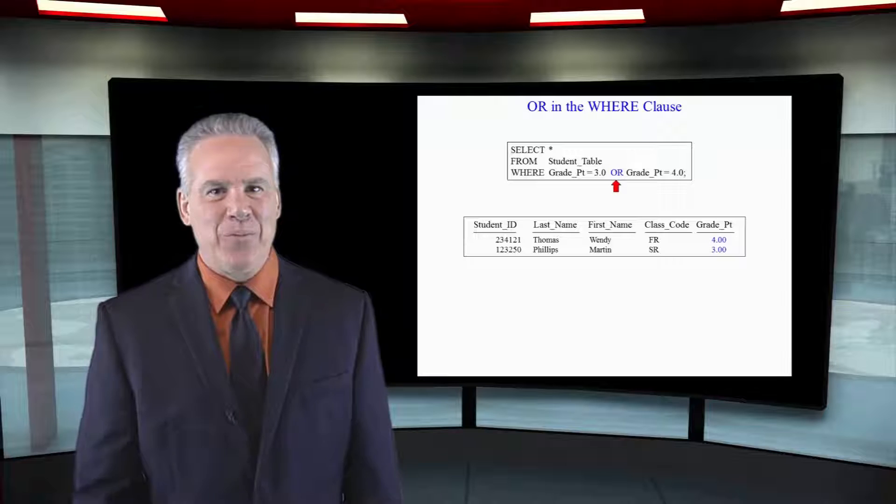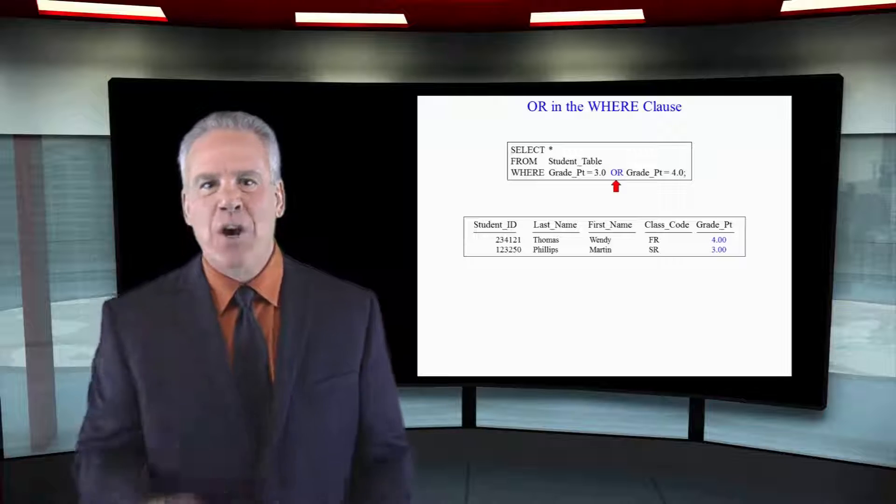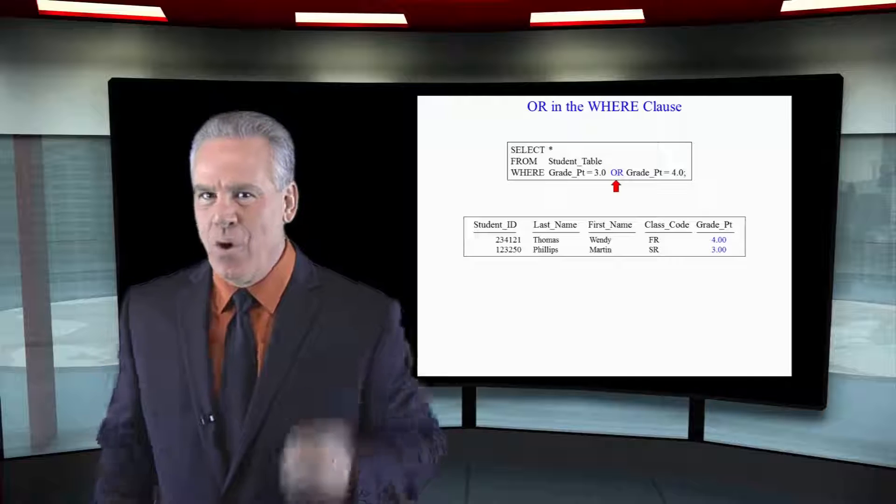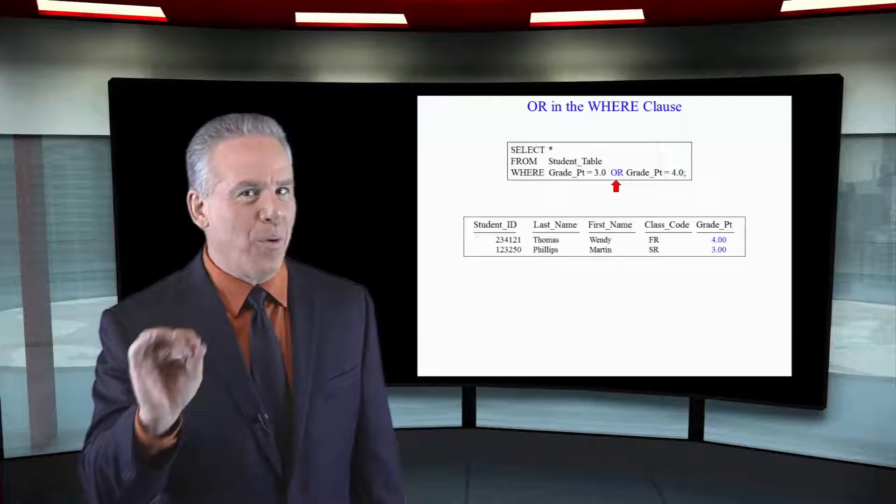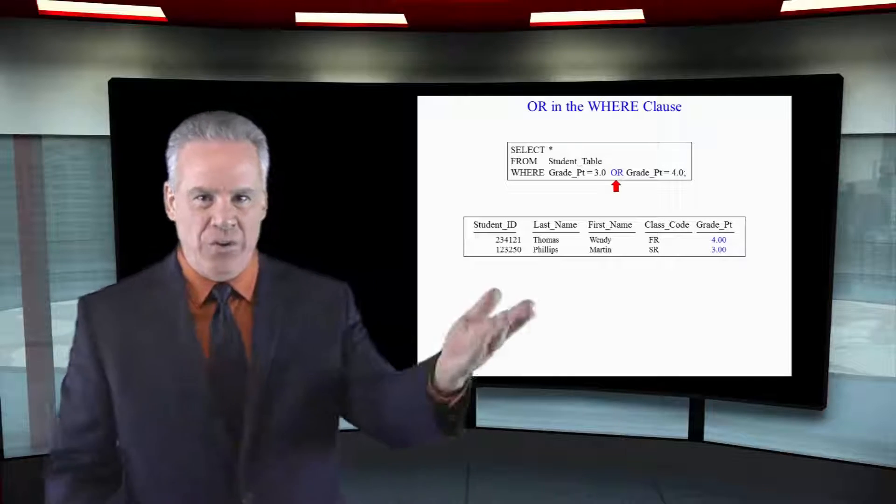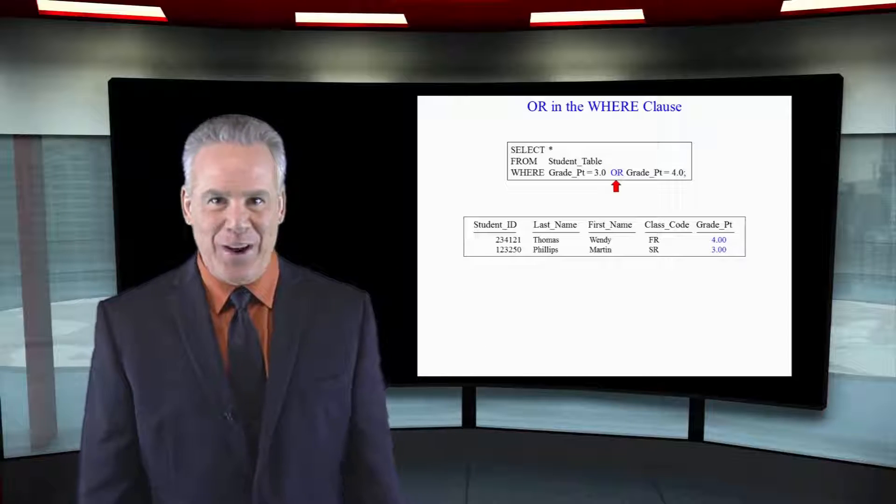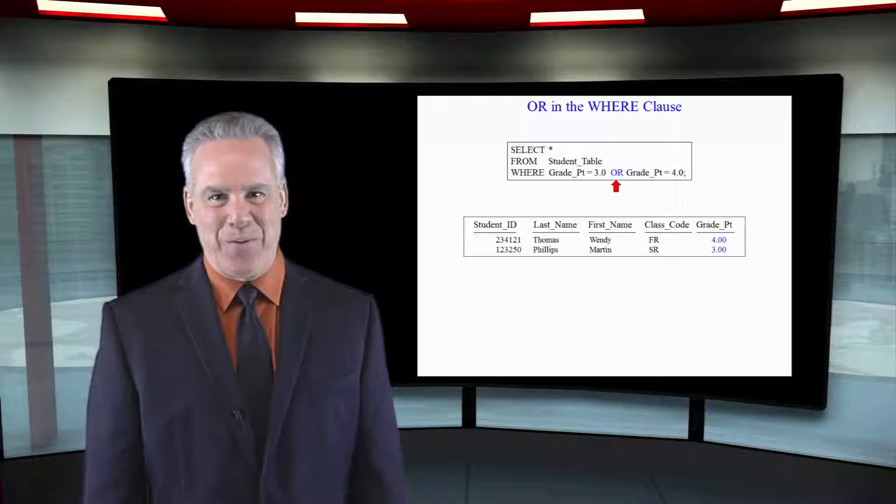Now, we've got it right. We'll use not an AND, but an OR, where grade point equals 3.0 or grade point equals 4.0. And as you can see, a couple of rows came back because they had either a 3.0 or a 4.0 in their grade point.